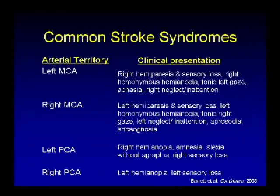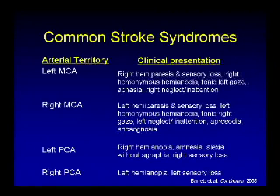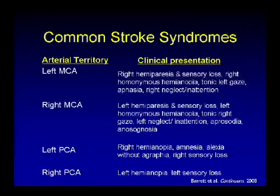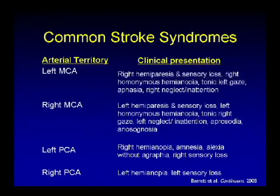There is also ipsilateral gaze deviation to the left, involving the frontal eye fields — you look toward a destructive lesion, so leftward with a left MCA stroke. A language deficit, either motor or sensory aphasia or both, and hemi-neglect or inattention of the contralateral side while remaining aware of it. With a right MCA stroke, the same contralateral symptoms apply, with differences being aprosodia — an inability to control or understand intonation of voice — and anosognosia, where the patient is unaware they have a severe deficit.